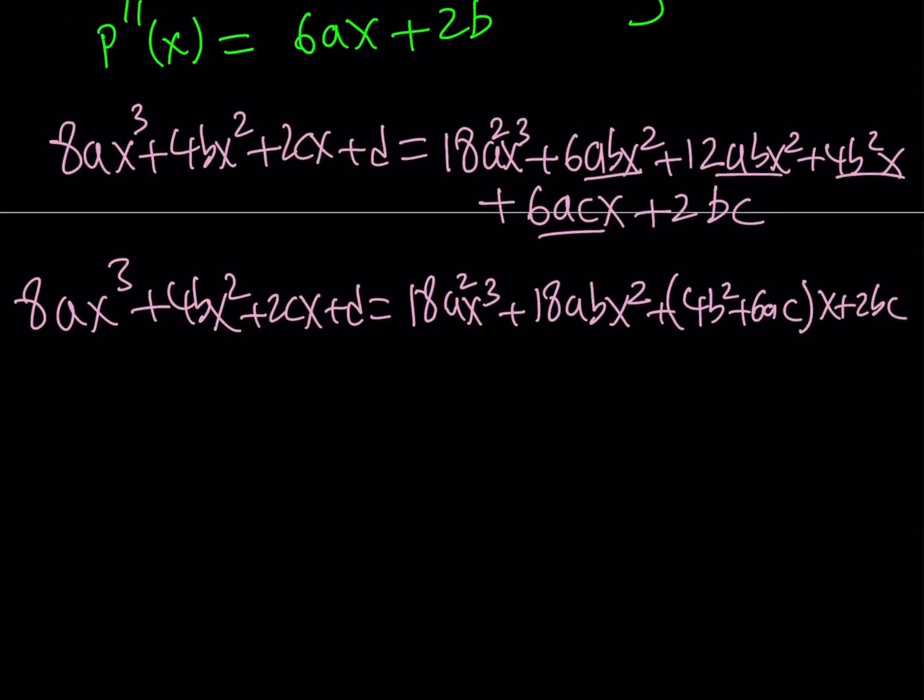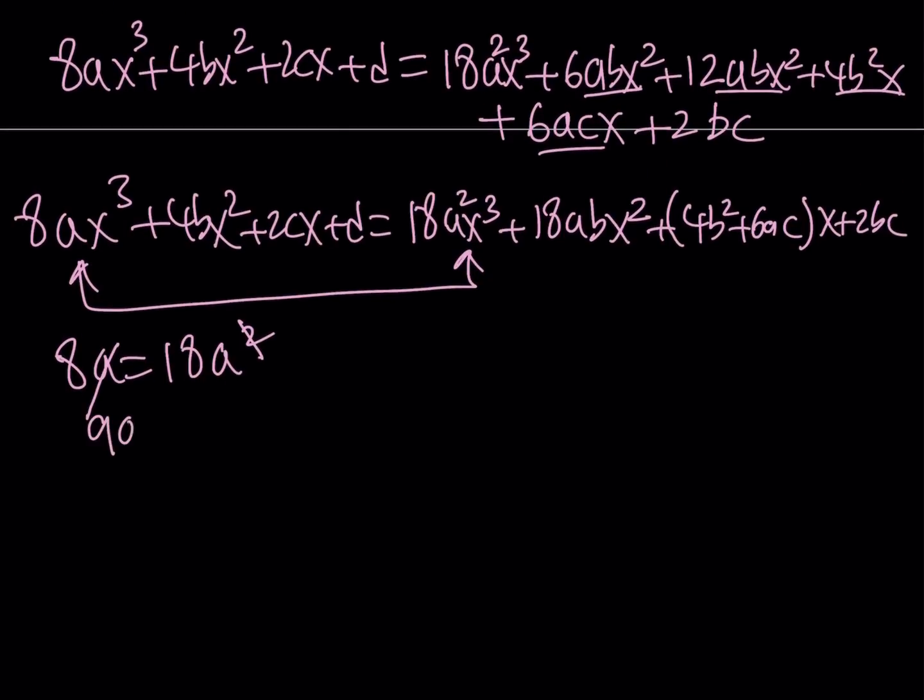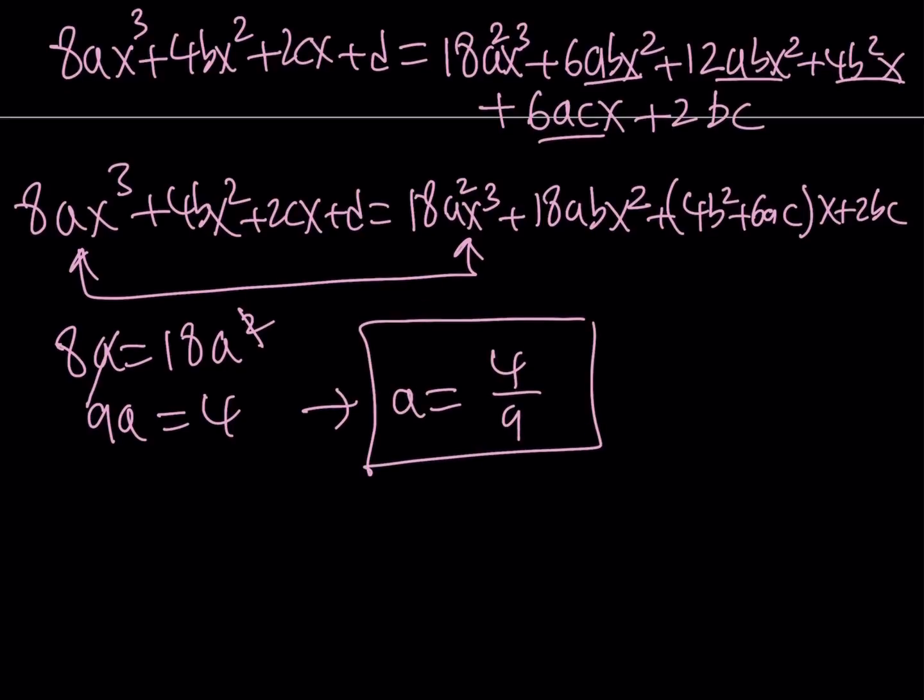Let's set these coefficients equal to each other. 8a = 18a². Since a is not equal to 0, I can divide both sides by a. This gives us 8 = 18a, so a = 4/9. Great, a is non-zero.